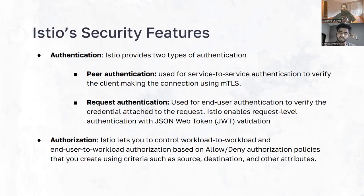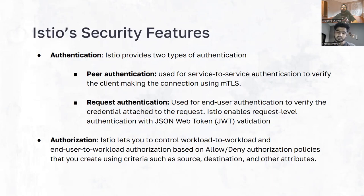Request authentication is used for end-to-end user authentication. Whenever an end user makes a request to your services with any credential attached to it, Istio's request authentication is responsible for validating those credentials. Istio primarily supports JSON web tokens, abbreviated as JWT. Request authentication verifies the JWT attached to your request and decides whether the request identity is authenticated or not. Once the request is authenticated, it is forwarded for authorization.